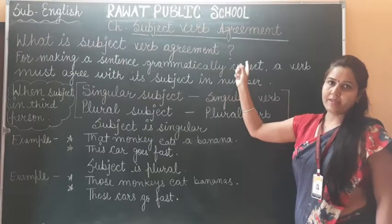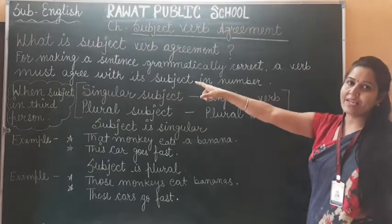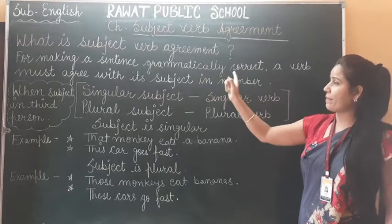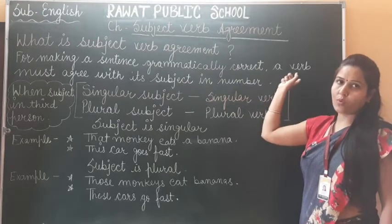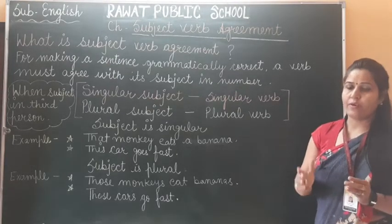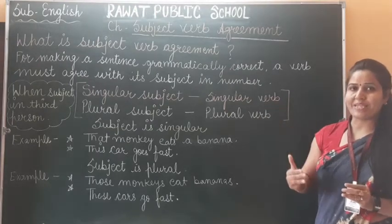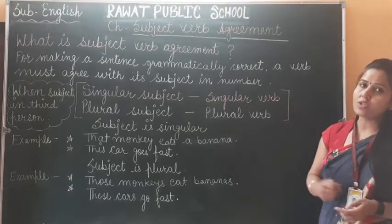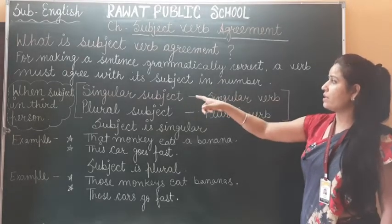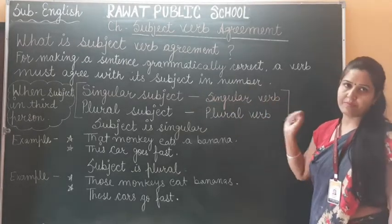What is subject-verb agreement? For making a sentence grammatically correct, a verb must agree with its subject in number. Sentence को grammatically correct करने के लिए verb को number में subject के साथ agree होना चाहिए. The rule is: singular subject must have singular verb, and plural subject must have plural verb.